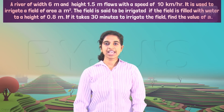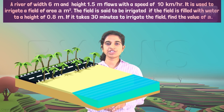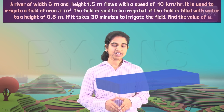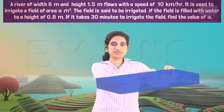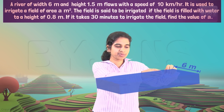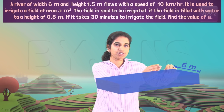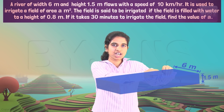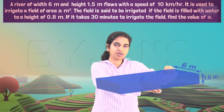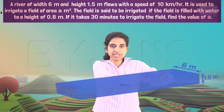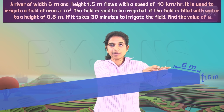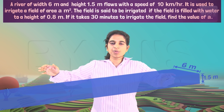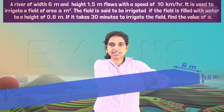In this question we have a river which is in the form of a cuboid. The river has a breadth of six meters and a height of 1.5 meters. This river is flowing and we don't know the length, because the river is a continuous cuboid — there's no finite length.